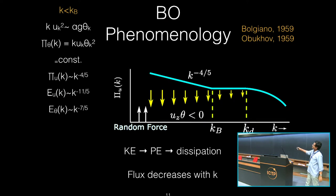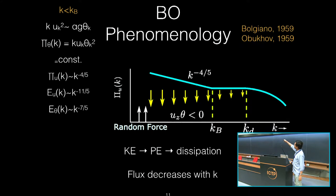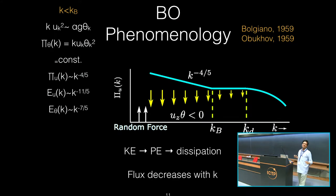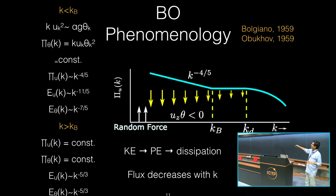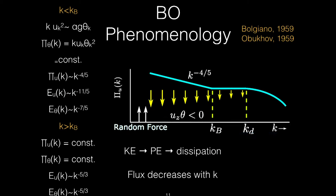As a result, this is a crux of the argument. The flux is decreasing with k. This is nonlinear with equating the terms and it's simple analysis. Flux is decreasing with k, k minus 4 to 5, and spectrum is minus 11 by 5. It is not 5 third. Let's focus only on this regime. I will not discuss about some other subtle points.